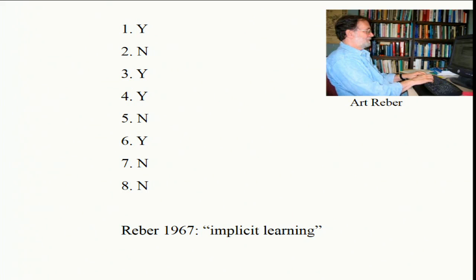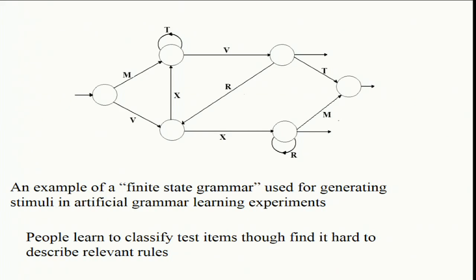Even in a typical experiment like this there would be considerably more exposure to the material than the one or two minutes I gave. This was the paradigm introduced by Art Reber in 1967, and he coined the term implicit learning to describe what was going on. I'll show you the rules that he used.